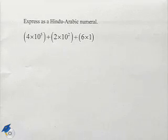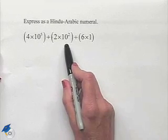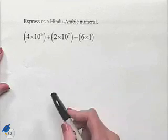Here's another problem dealing with expanded notation. Express as a Hindu-Arabic numeral: 4 times 10 to the 5th plus 2 times 10 squared plus 6 times 1.